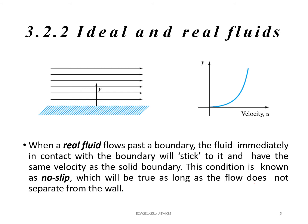3.2.2: Ideal and real fluid. Let's go through first on the real fluid. When a real fluid flows past a boundary, so we have this one of the boundary, the blue line. The fluid will immediately in contact with the boundary but they will not stick to it. And have the same velocity as the solid boundary.